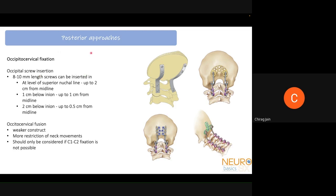Occipital cervical fixation is indicated when screws cannot be placed directly in C1-C2, or when fusion must be extended to the occipital level. Occipital screws of 8-10 mm length can be inserted: at the superior nuchal line up to 2 cm from midline, 1 cm below the inion up to 1 cm from midline, and 2 cm below the inion up to 0.5 cm from midline. Importantly, occipital cervical fusion is a weaker construct than C1-C2 fixation and causes more restriction of neck movements; it should only be considered when C1-C2 fixation is not possible.